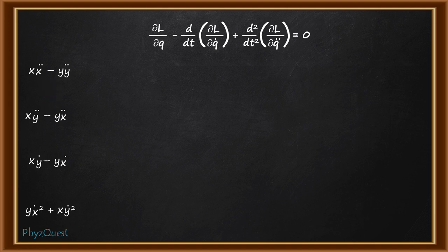So the question is we have to find out which of the term when added to the original Lagrangian will not change its equation of motion. That means when we add this term and operate this Lagrangian with this equation of motion the final output will be the same.